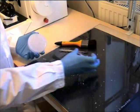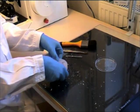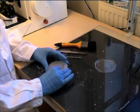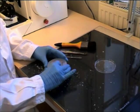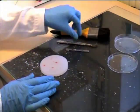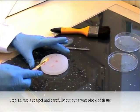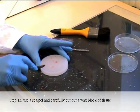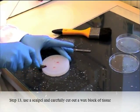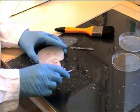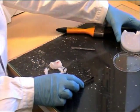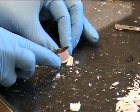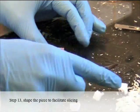Turn on the hot plates and have melted histi-wax available. Take out the samples from the cauldron. Step 13: Use a scalpel to carefully cut out the wax block of tissue. Shape the piece to facilitate slicing.